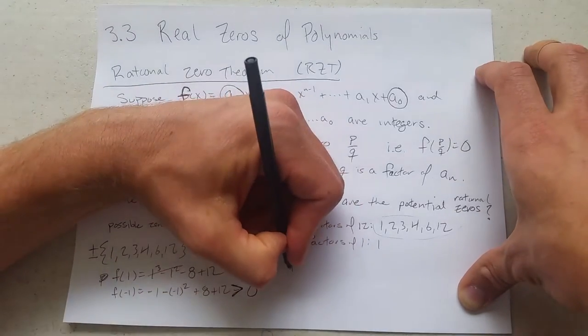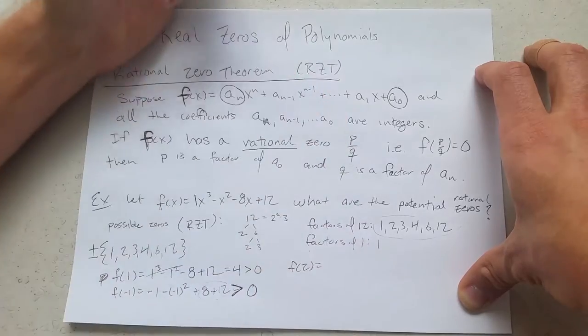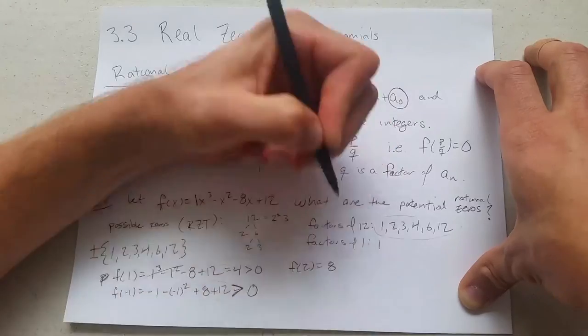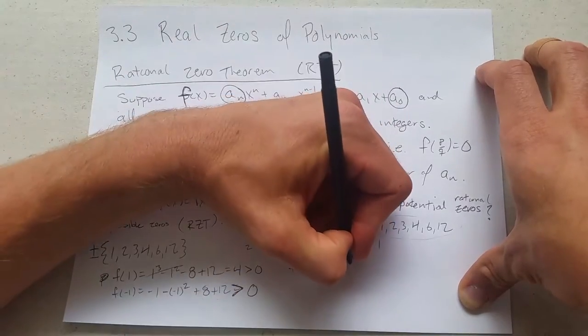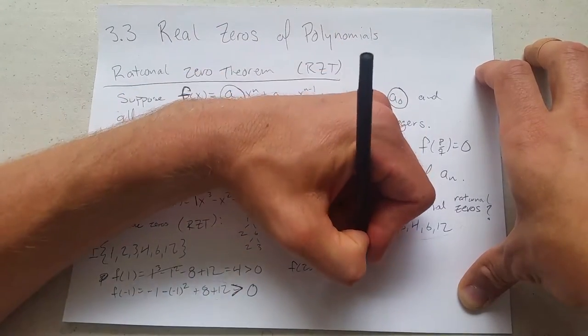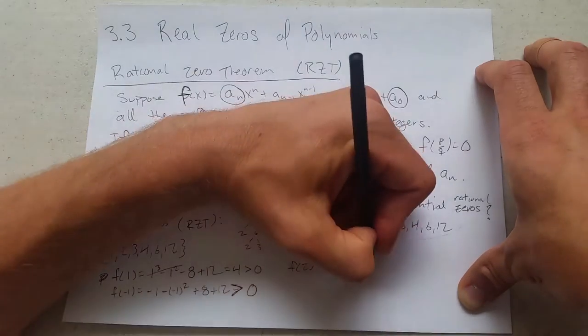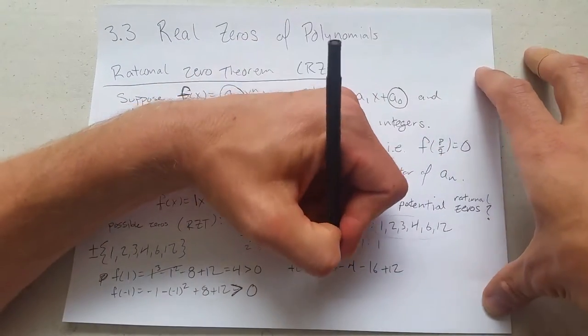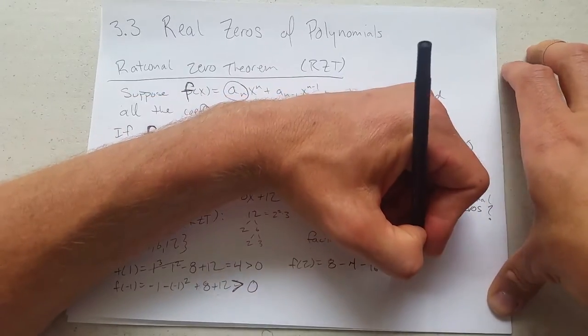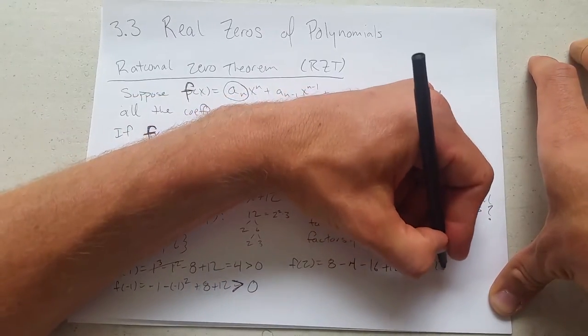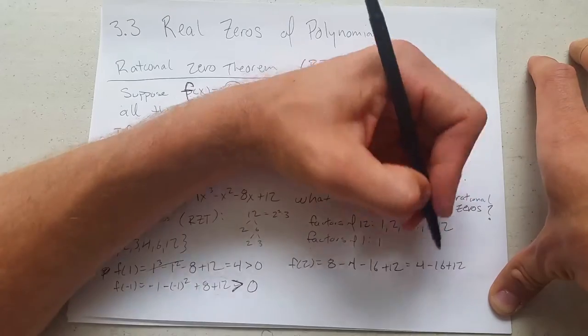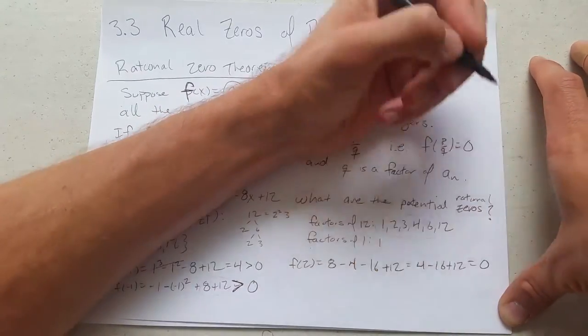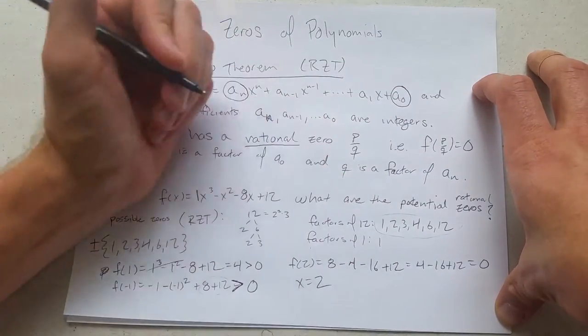So we're going to take 2 and plug it into f. These can start to get more tricky. 2³ is 8. -2² is -4. -8(2) is -16, +12. Alright. 8 - 4 is 4. -16 + 12. 4 + 12 is 16. -16. We have a big winner: x equals 2.